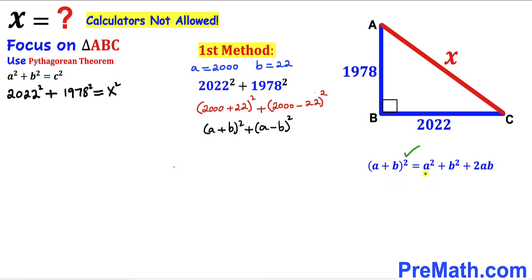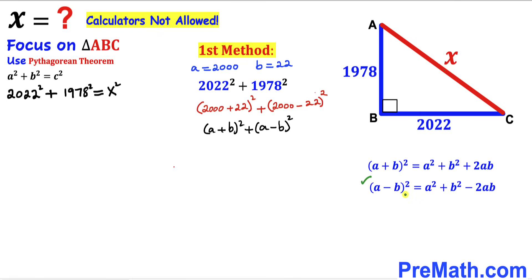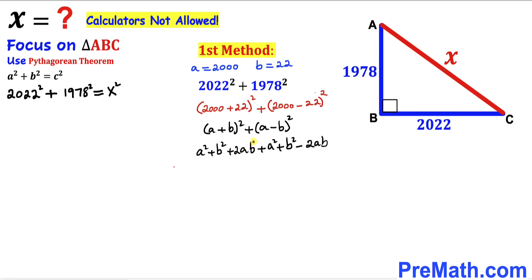Recall the identities: (A + B)² = A² + B² + 2AB, and (A − B)² = A² + B² − 2AB. Applying both, we get A² + B² + 2AB plus A² + B² − 2AB. The +2AB and −2AB cancel each other, and combining like terms gives us 2(A² + B²).